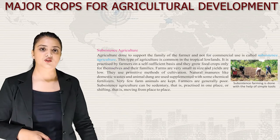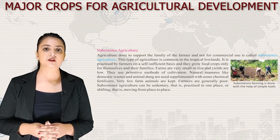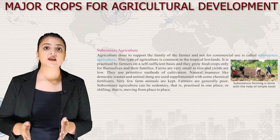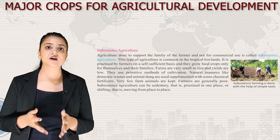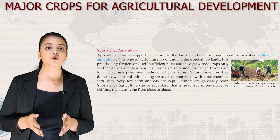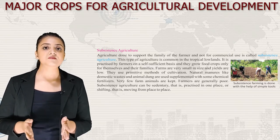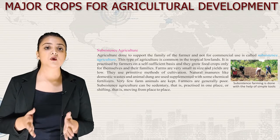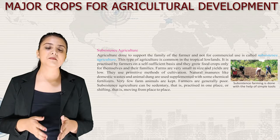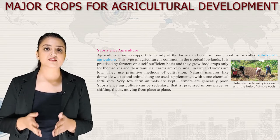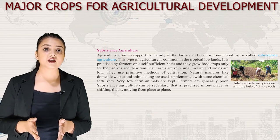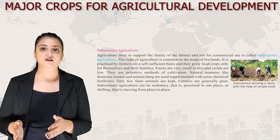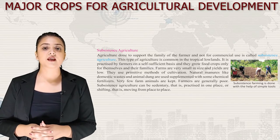First is subsistence agriculture. Agriculture done to support the family of the farmer and not for commercial use is called subsistence agriculture. This type of agriculture is common in the tropical lowlands. Farmers grow food crops only for themselves and their families. Farms are very small, yields are low, primitive methods are used, and very few farm animals are kept. Subsistence agriculture can be sedentary — practiced in one place — or shifting, moving from place to place.